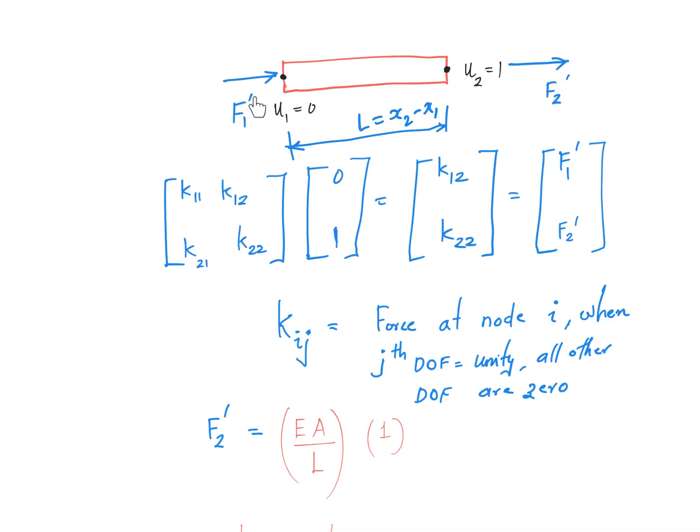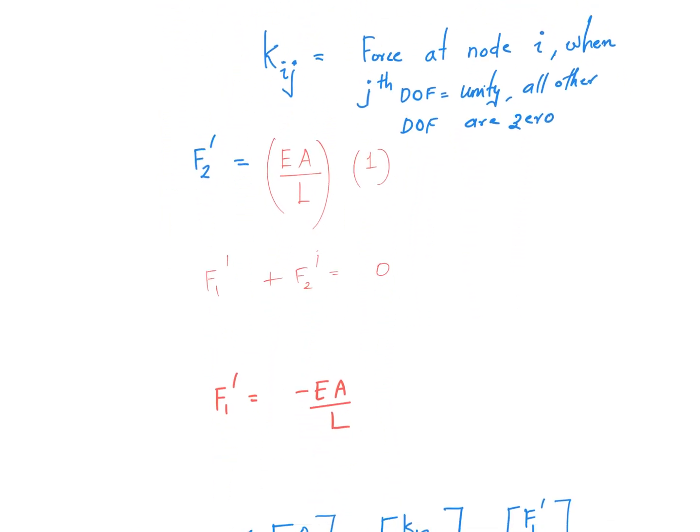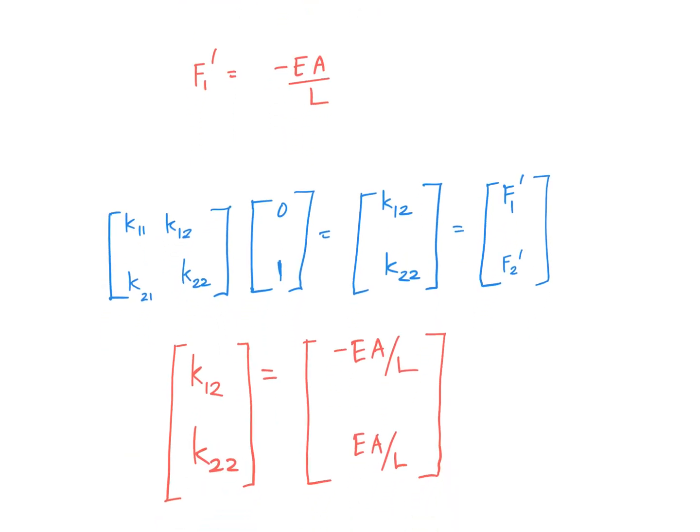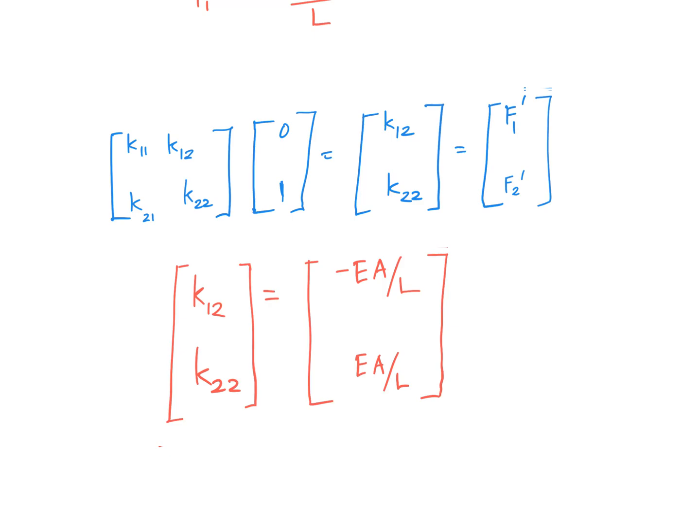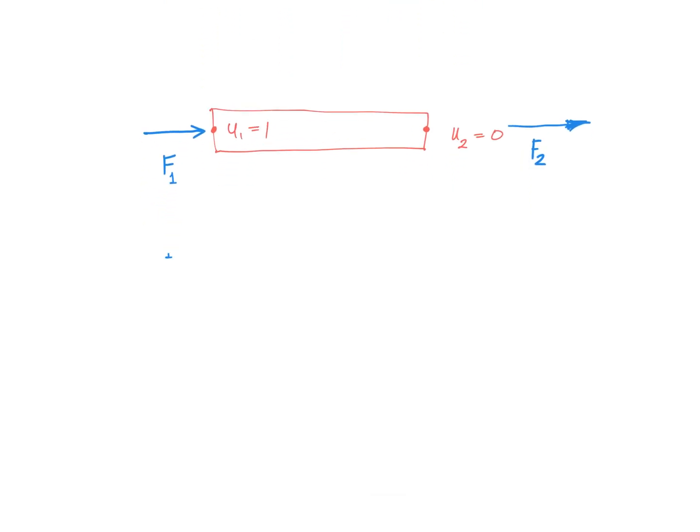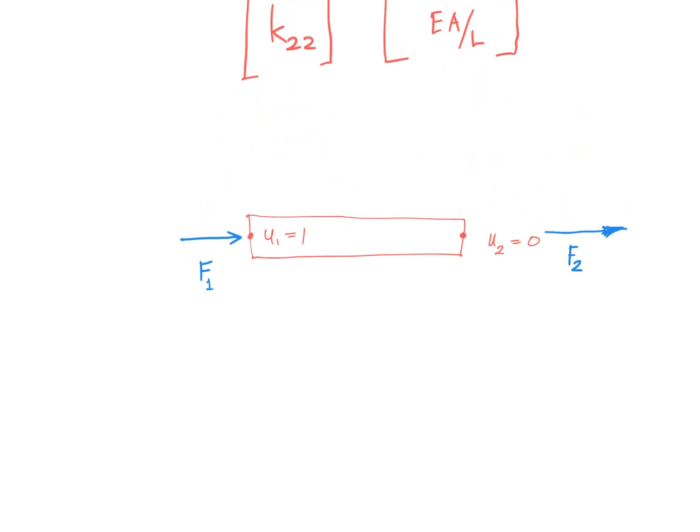So this is the force I need to apply here. If f2 prime is known then f1 prime is an easy thing to find out. Why? Because these two things have to be in equilibrium. Once you add those two you should get zero because the element is not accelerating to the right side. Since it has to be in equilibrium, f1 prime has to be minus EA/L. So with that now we have the second column in our stiffness matrix. A similar exercise can be done for this problem also.